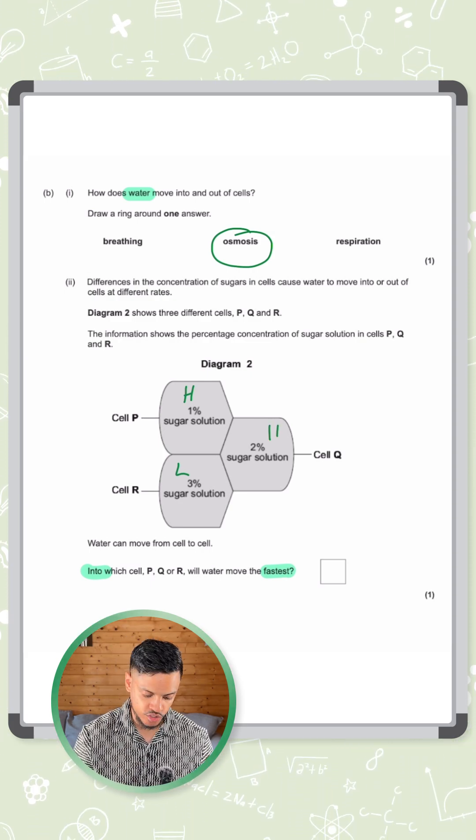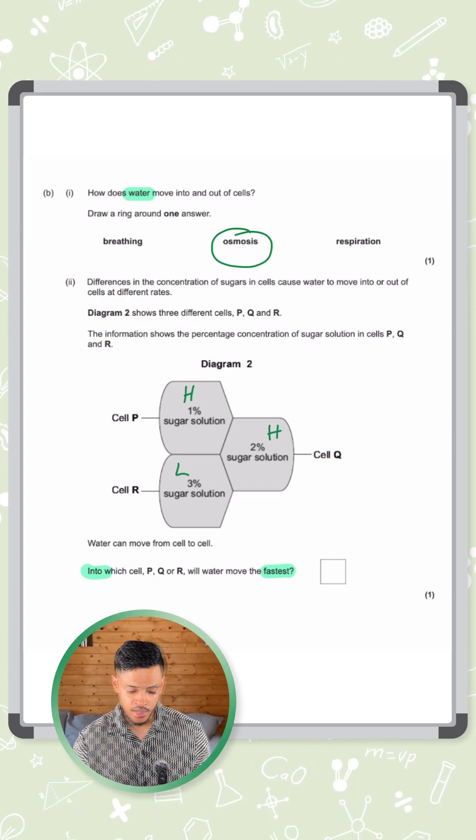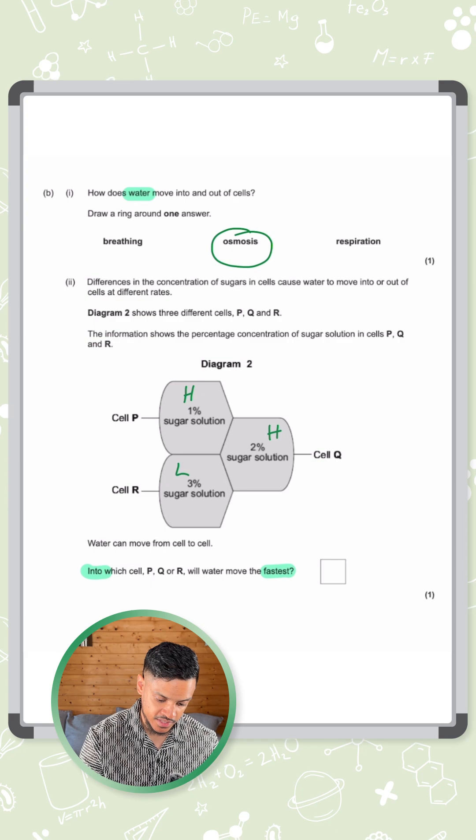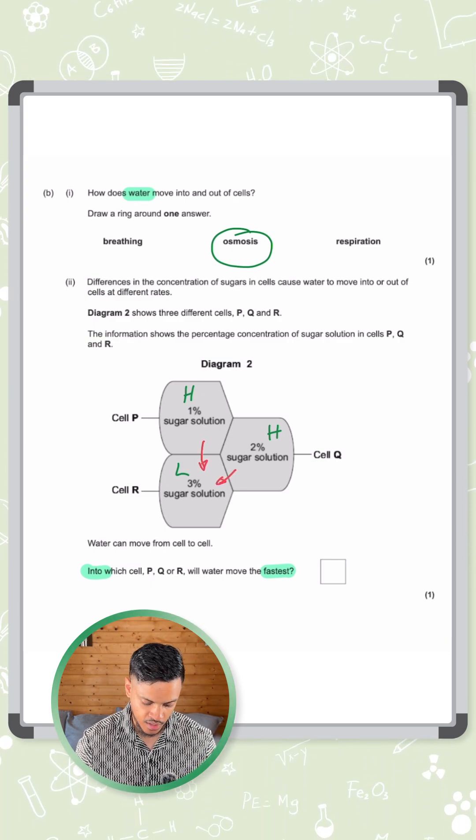It only has 97% water, whereas the one percent one has 99% water. The two percent one is still high—it's higher than cell R because that's got 98% water. So what's going to happen is the water is going to move into cell R.